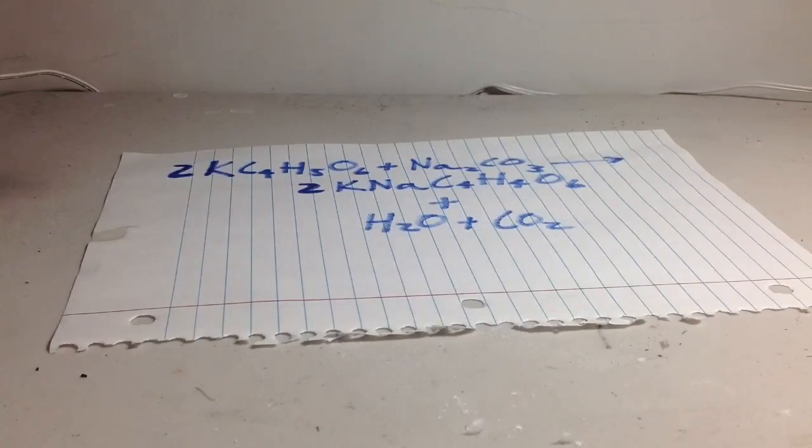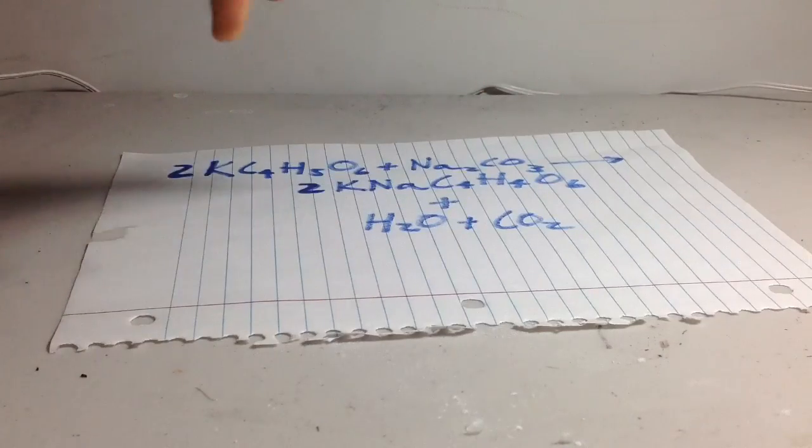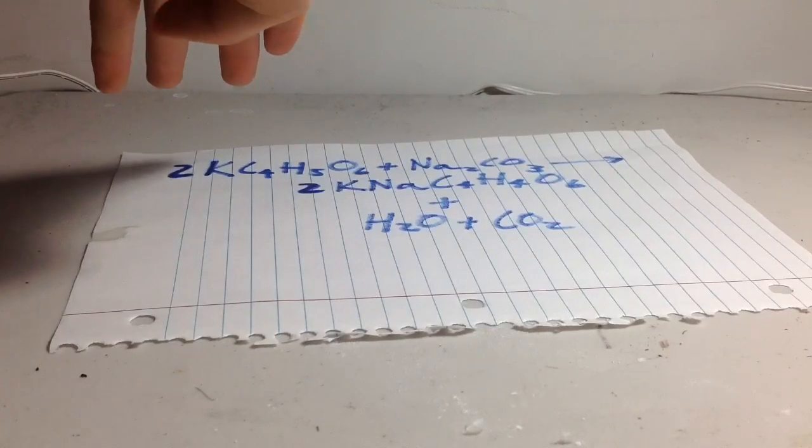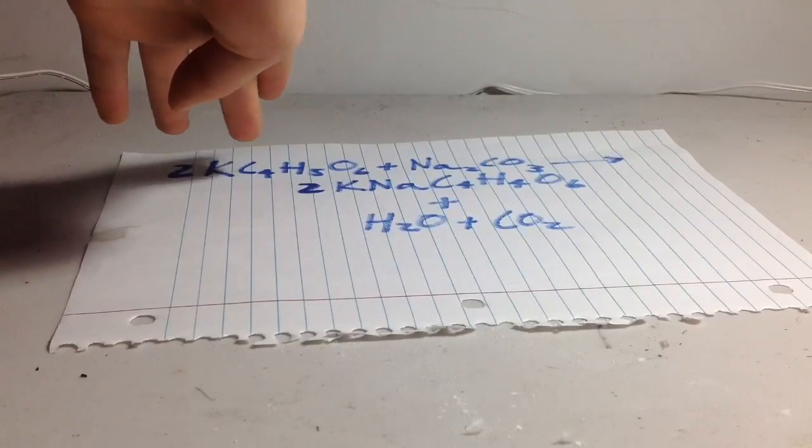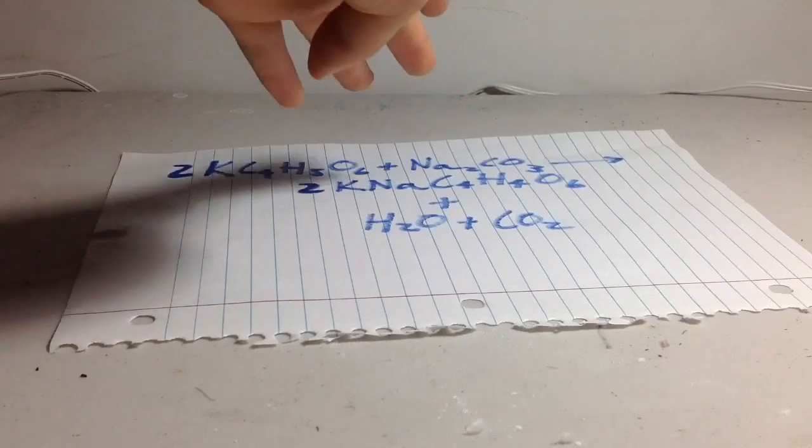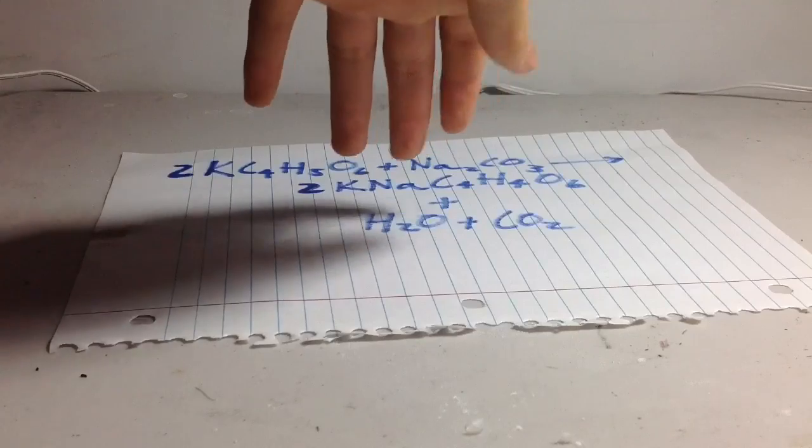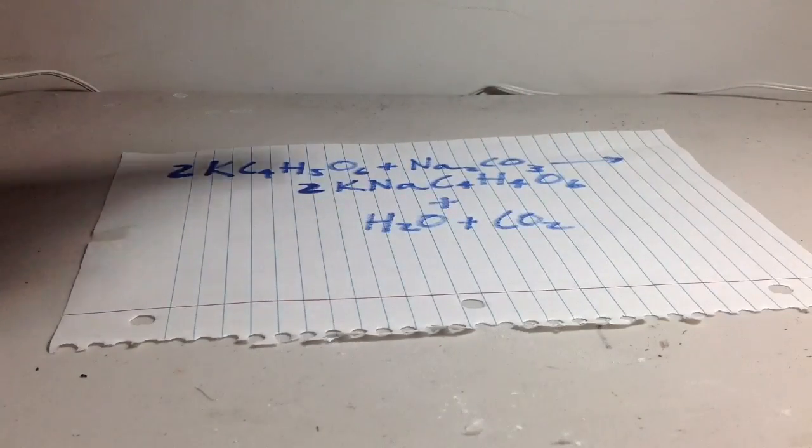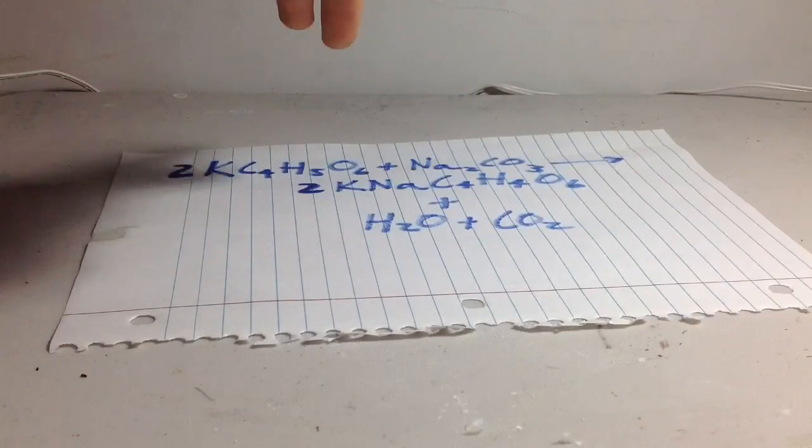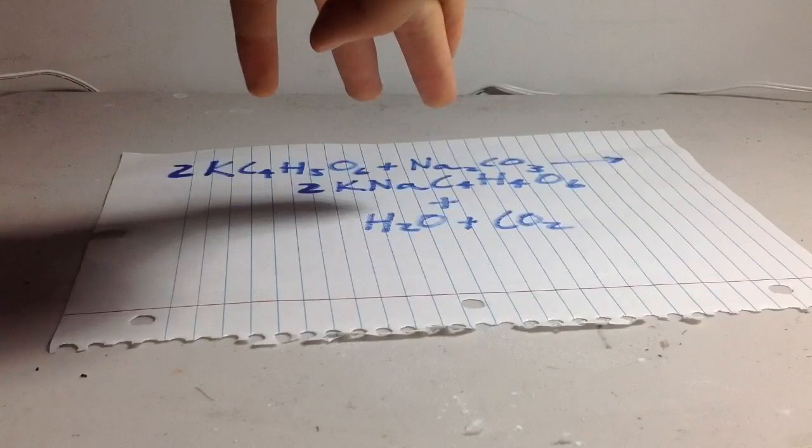What happened during the reaction was an acid-base reaction, and acid and base neutralized each other. The cream of tartar, or potassium bitartrate, donated hydrogen ions to the sodium carbonate, which is a base. The carbonate ions and the hydrogen ions react to form water and carbon dioxide, and the carbon dioxide is the bubbles that you see. This leaves sodium ions, potassium ions, and tartrate ions in the solution, which I have written as potassium sodium tartrate, and that is the Rochelle salt that we are after.